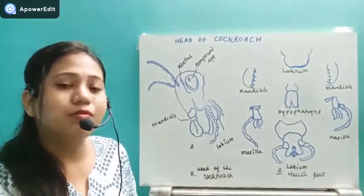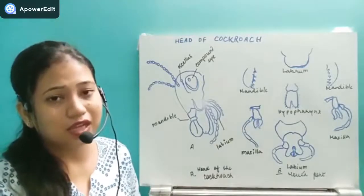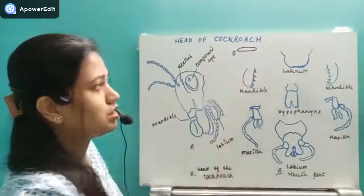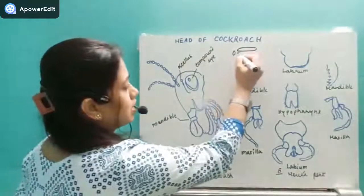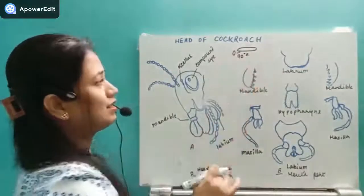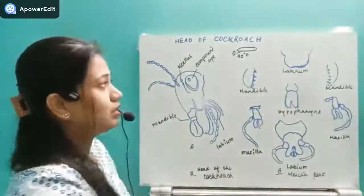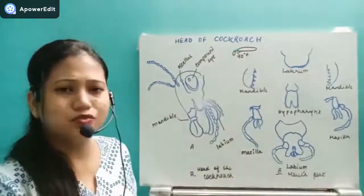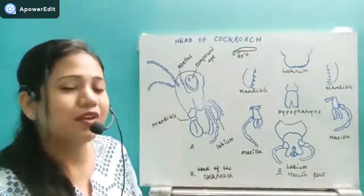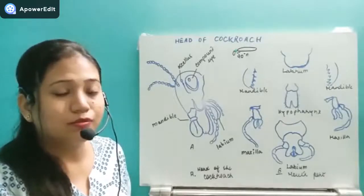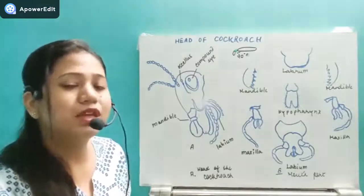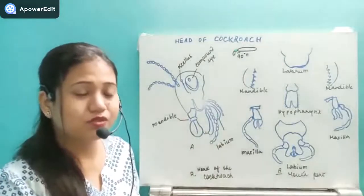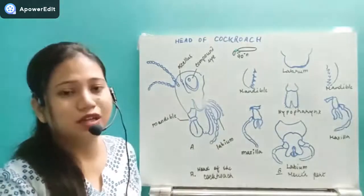Coming to the head region, it is present at a right angle to the body — at 90 degrees. The head is attached to the body by means of a small movable neck. This neck has muscles which allow maximum movement to the head, enabling the head to move at a considerable angle.